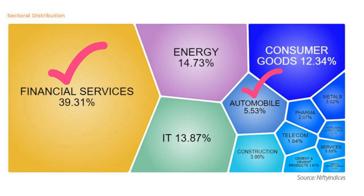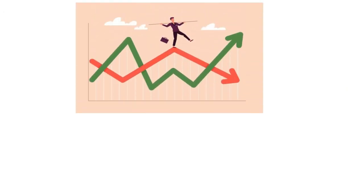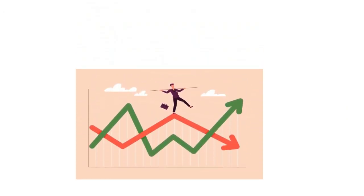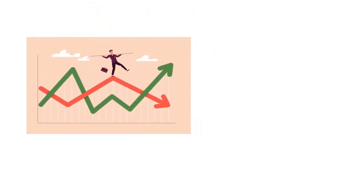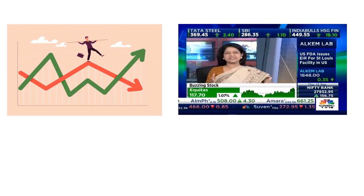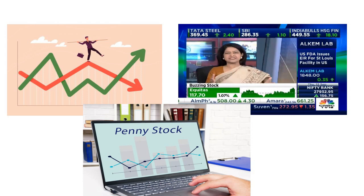I'll explain why I selected these two sectors. First, don't select stocks that are moving more than 10 to 15 percent a day. Don't select stocks that are trending on the news. And one more important point — don't select penny stocks, thinking a 10-rupee stock will easily become 100 rupees. This type of thinking is not good. Penny stocks can sometimes be easily manipulated.